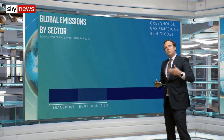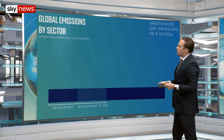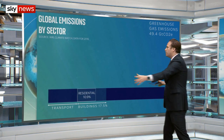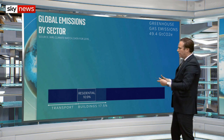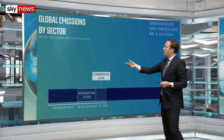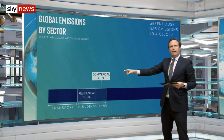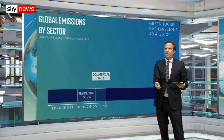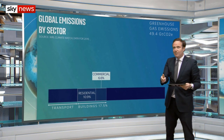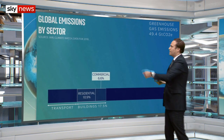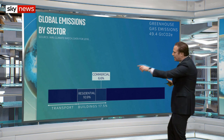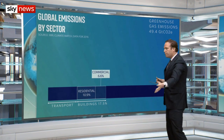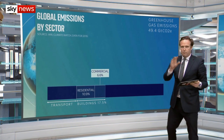Then you've got buildings — emissions coming from our homes, that's about 11% of the total — and then commercial premises. We're talking about electricity going into office blocks, heating and air conditioning for those office blocks and for homes as well. That's about 17.5% of total global emissions — remember, that 50 billion or so tonnes of carbon dioxide we're talking about.